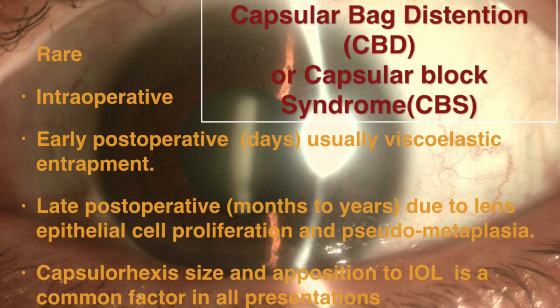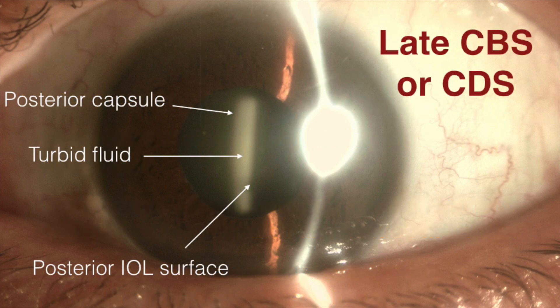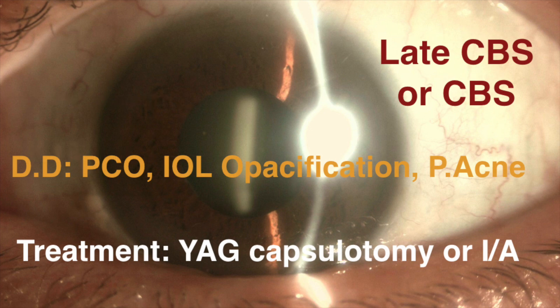This is a case of capsular block distension syndrome, also known as capsular block syndrome, which is rare. It can be intraoperative, early postoperative, or late postoperative, as in this case. It is due to lens epithelial cell proliferation and fibrous metaplasia. Capsular axis size and apposition to the intraocular lens is a common factor in all such cases. You can clearly see the fluid entrapment behind the posterior IOL surface in front of the posterior capsule.